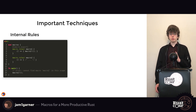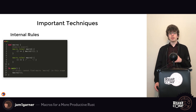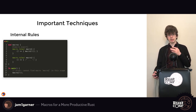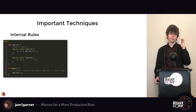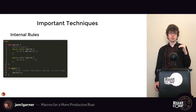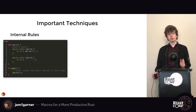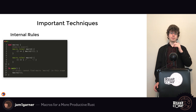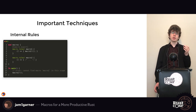An intermediate technique is internal rules. Here we have two macros — macro one and macro two — where macro one calls macro two. This might be necessary because the only way to encode multi-step parsing logic is through multiple patterns or rules. However, this causes a problem: if you import macro one into scope but not macro two, macro one tries to use macro two after it expands but it's not in scope.